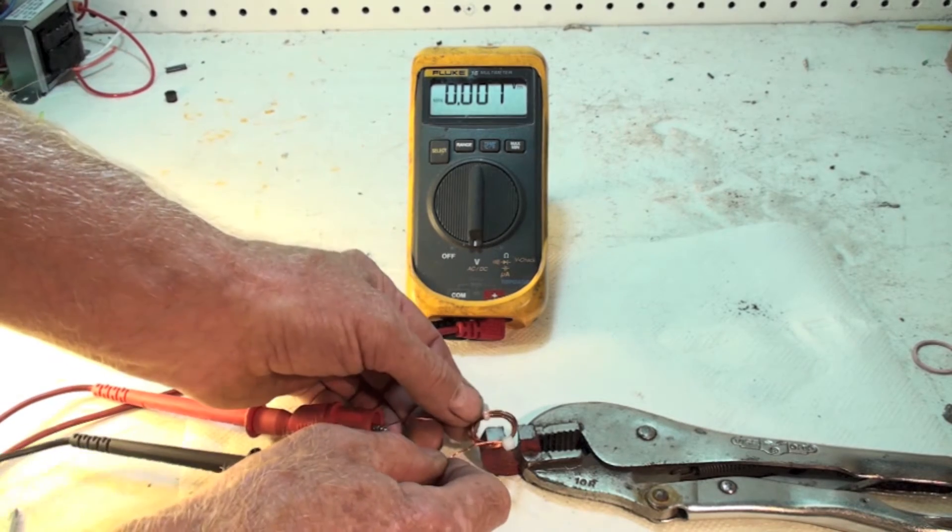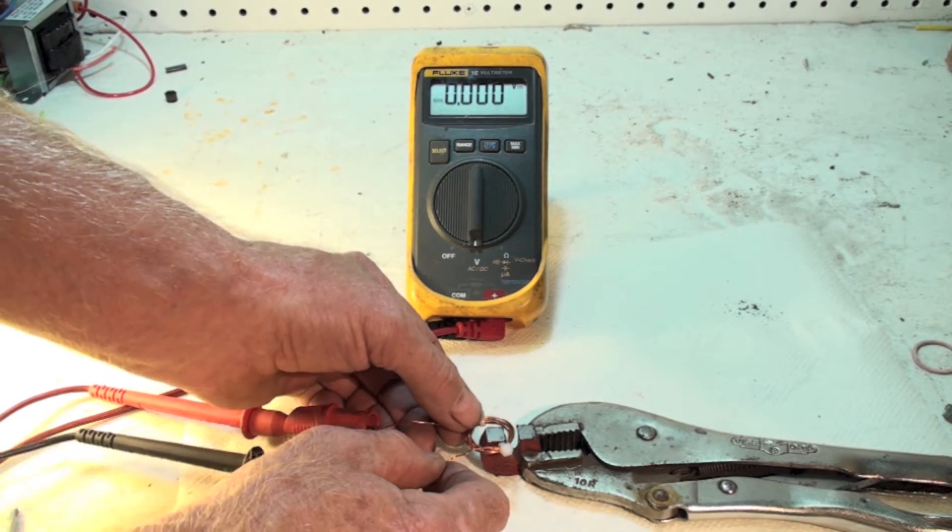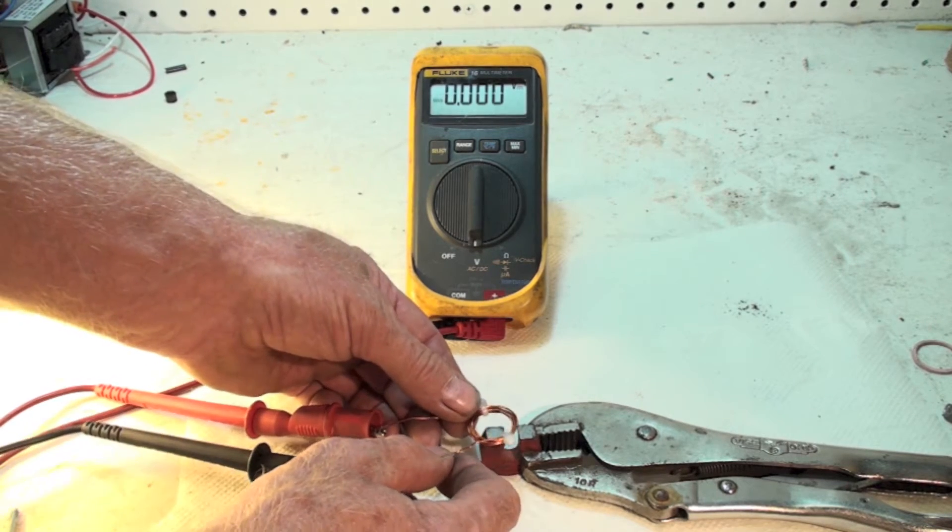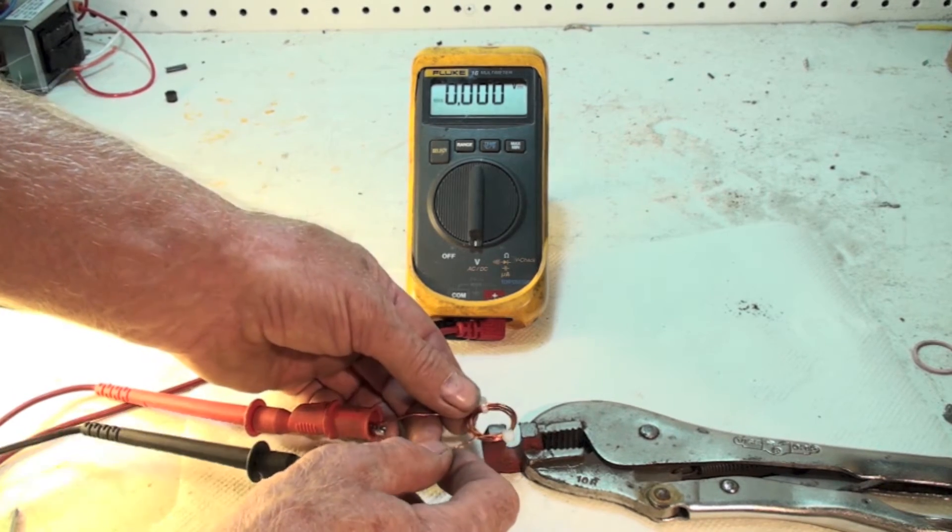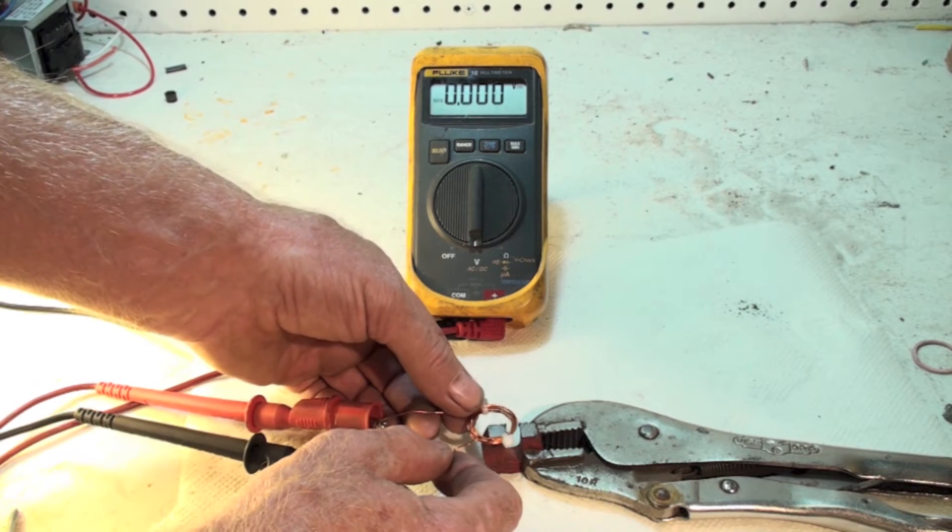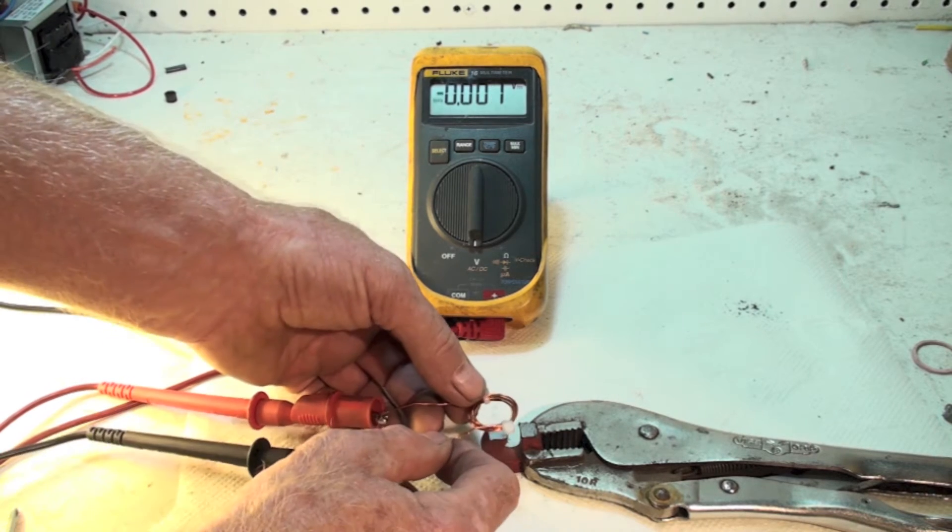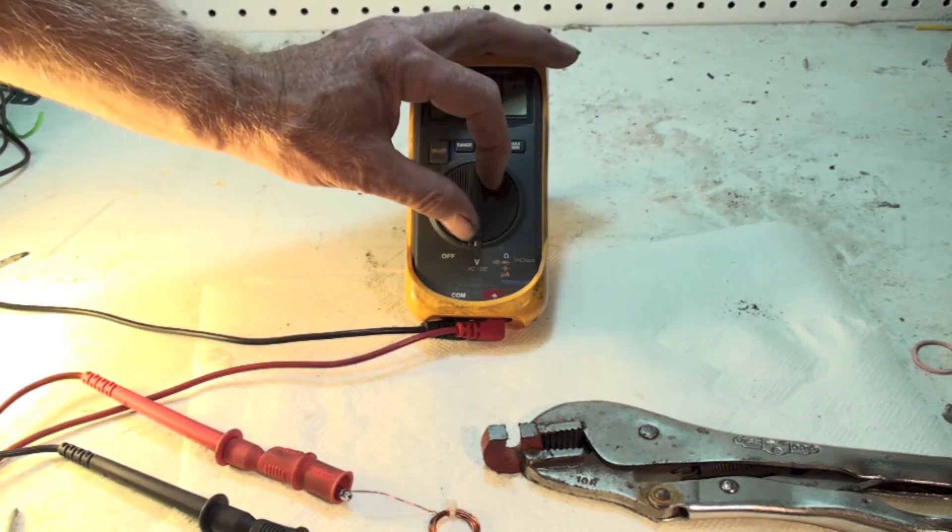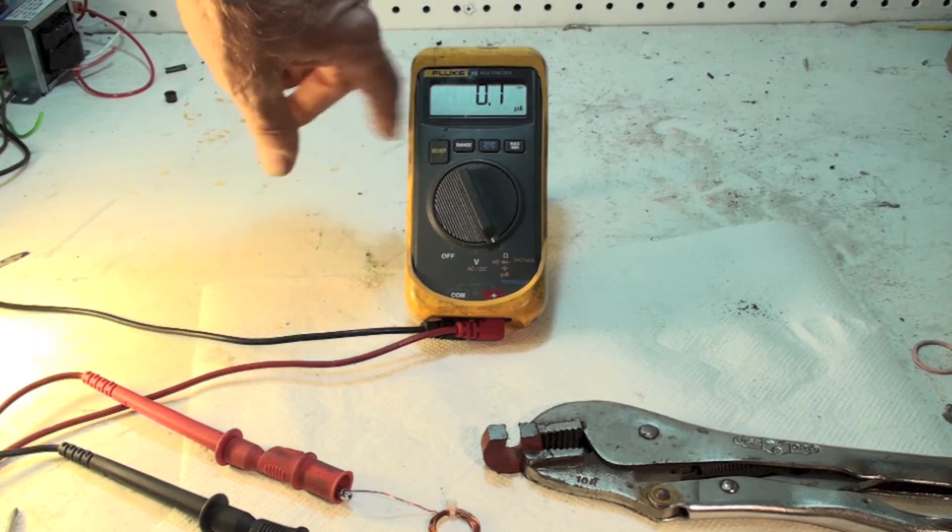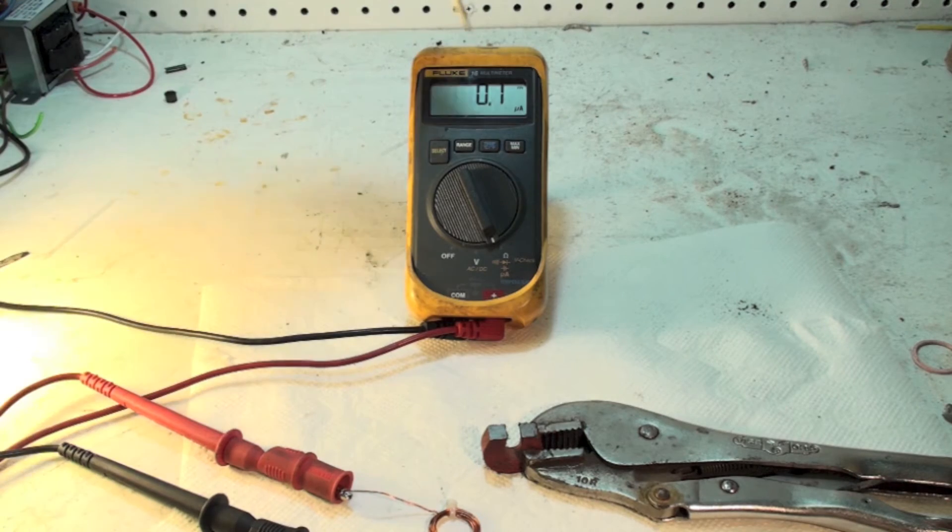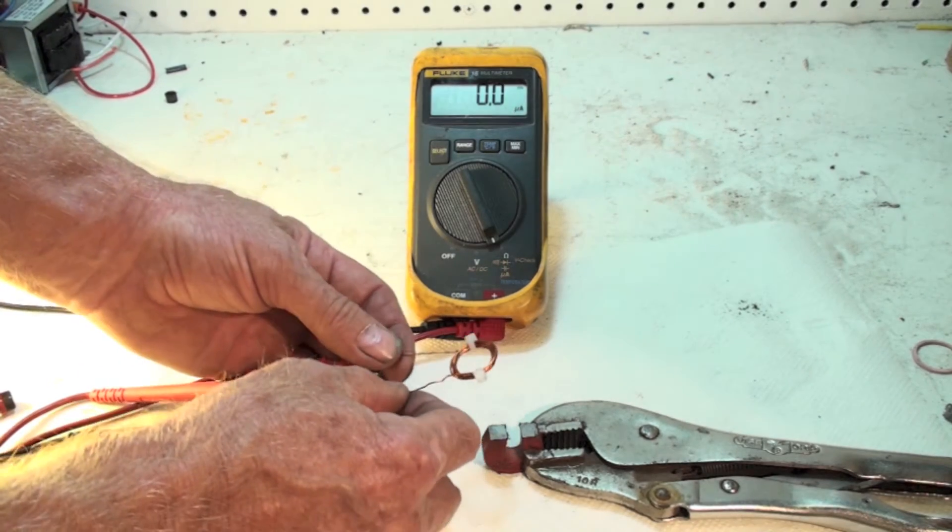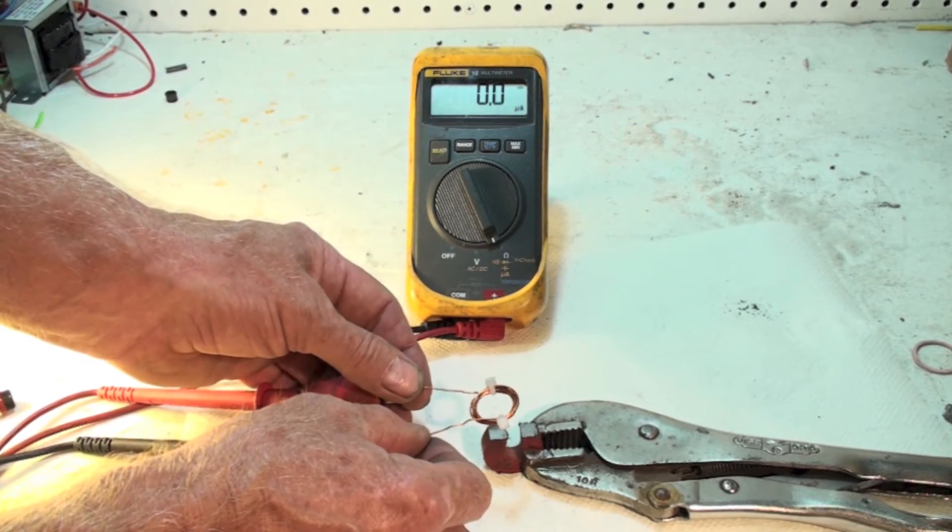Now you can see that occasionally I'll get a reading. Now it's only when it's moving. I can also put this in microamps. Because we're having both amperage and voltage going through this thing.